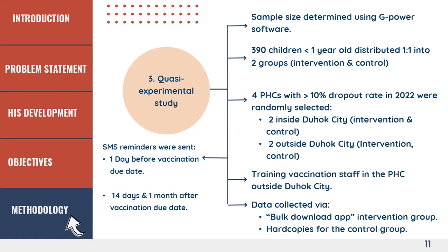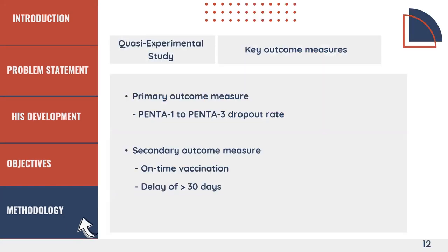The control group was the same target population — under-one-year-olds for Penta-1 to Penta-3 — but using routine immunization with no DHIS2 and no SMS reminders. Key outcome measures were the Penta-1 to Penta-3 dropout rate, on-time vaccination, and delay of more than 30 days, which is considered a dropout in this case.